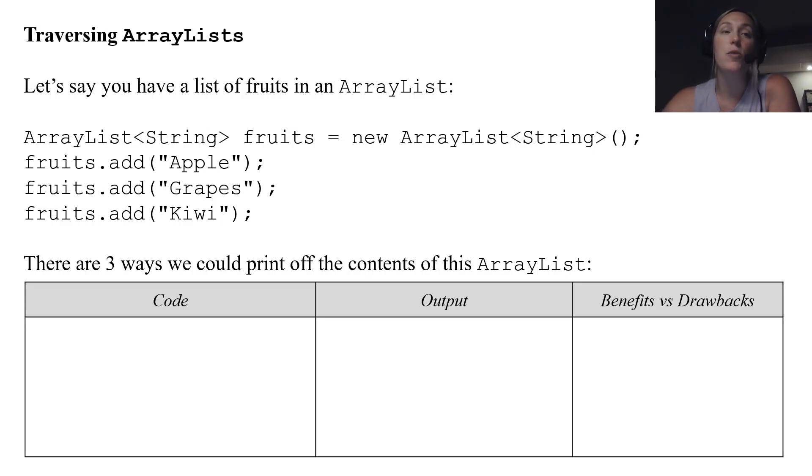Let's first say you have a list of fruits in an ArrayList. So here's creating the list of fruits: apples, grapes, kiwis. Perfect.